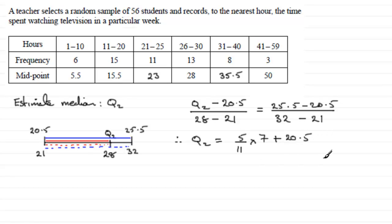So I've done it in a few stages there and just jumped them really. So you might want to take it at a slower pace. But there you go. 5 elevenths times 7 plus 20.5. Work that out on your calculator. And you should find you get 23.68181 and so on. And if we round this to say three significant figures, it's going to be 23.7 to 3 SF.